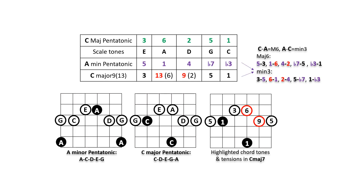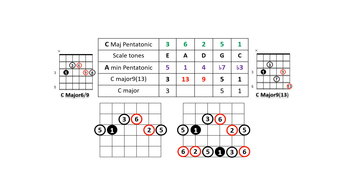To superimpose the A minor pentatonic scale or its relative C major pentatonic over C major 7, we must once again use the interval between the roots of the chord and the scale as a reference to determine the highlighted notes. Since C to A is a major sixth, the highlighted notes in the chord — 3, 6, 2, 5, 1 — are found 3 half steps below the scale degrees of the A minor pentatonic scale. Remember that ascending a major sixth is equivalent to descending a minor third. The highlighted notes can be visualized on the fretboard as minor thirds 3 to 5 and 6 to 1, and as major seconds 2 to 3, 5 to 6, and 1 to 2.